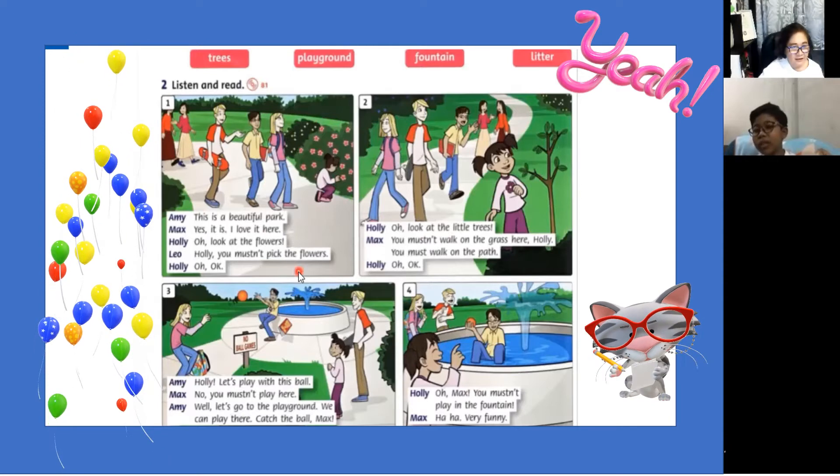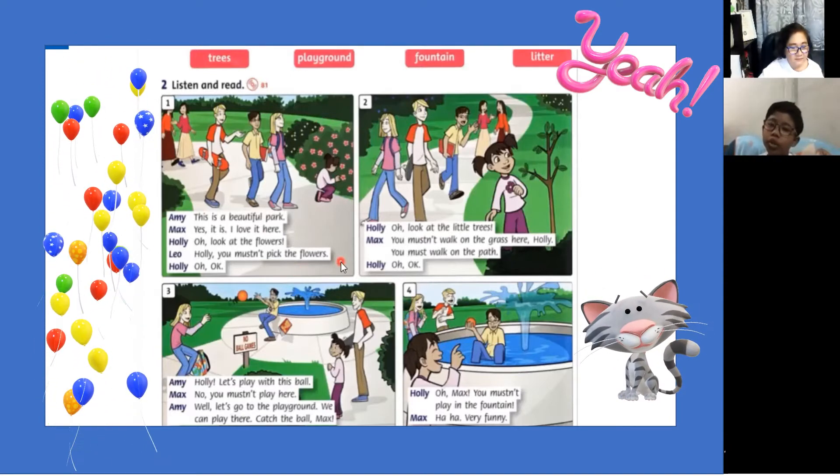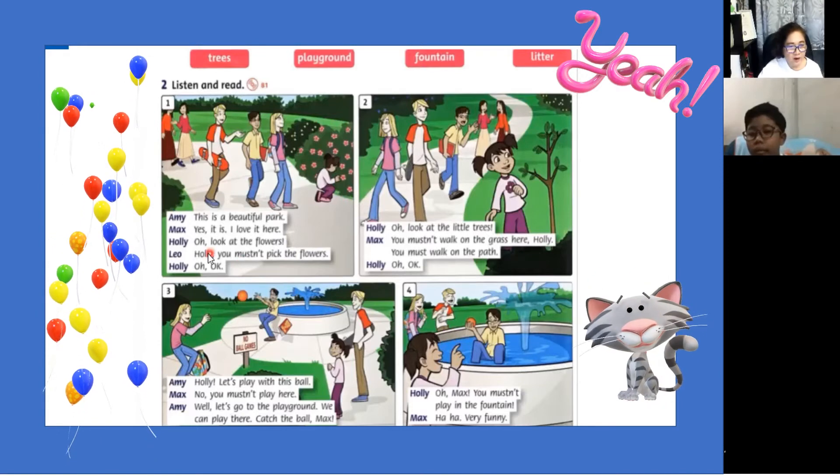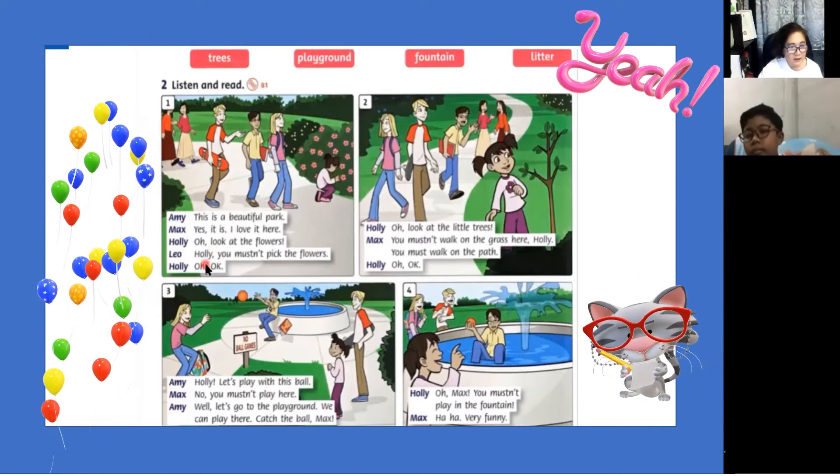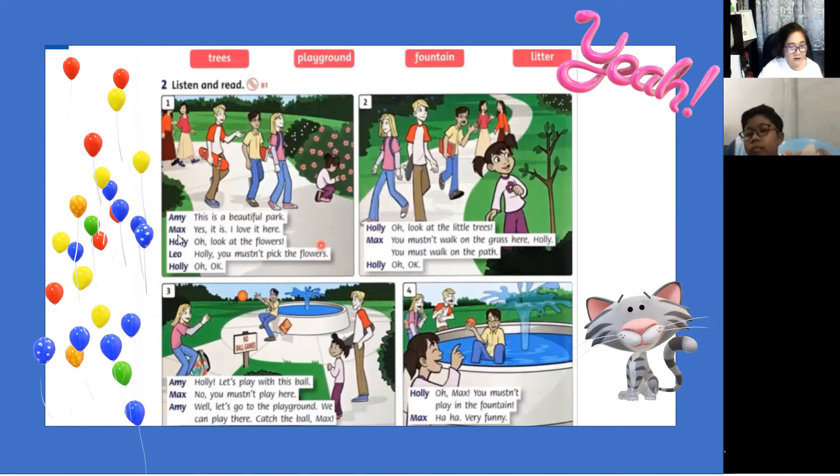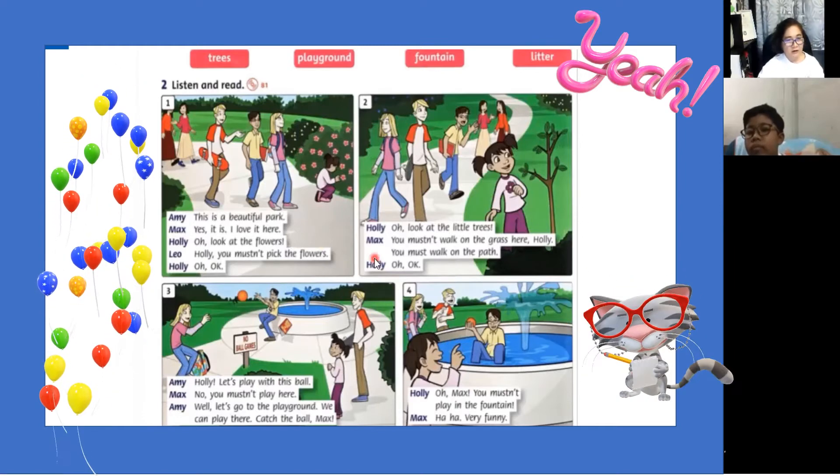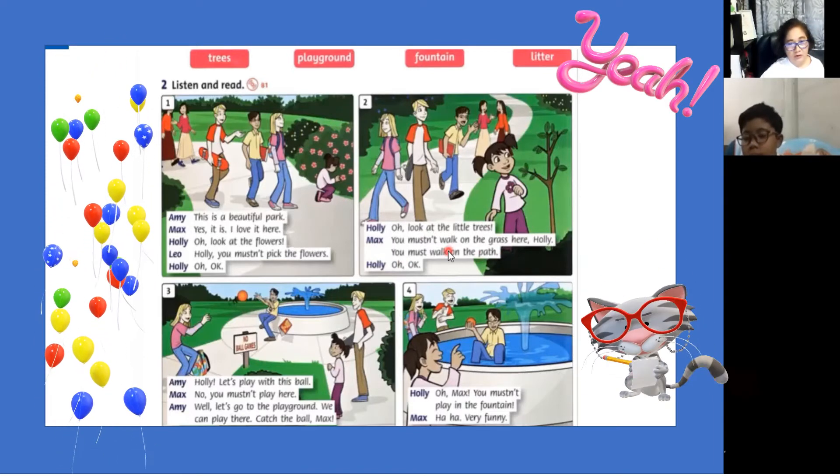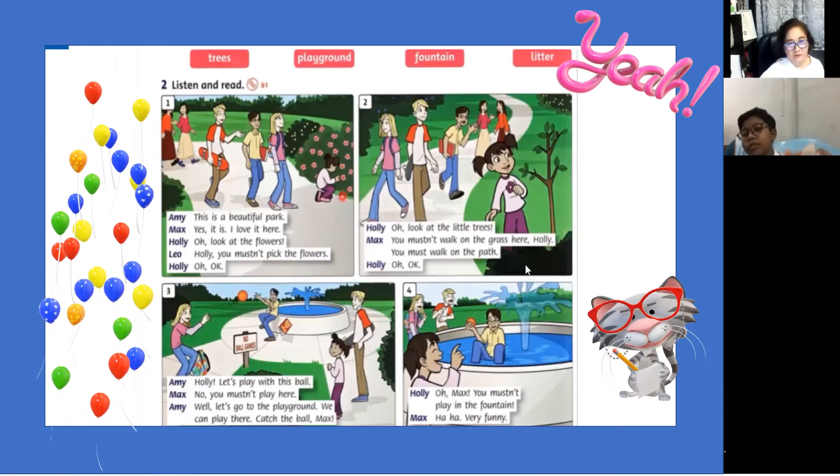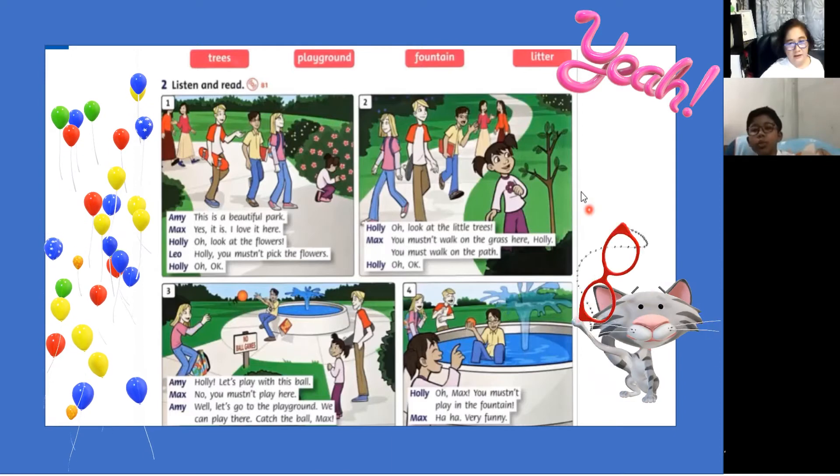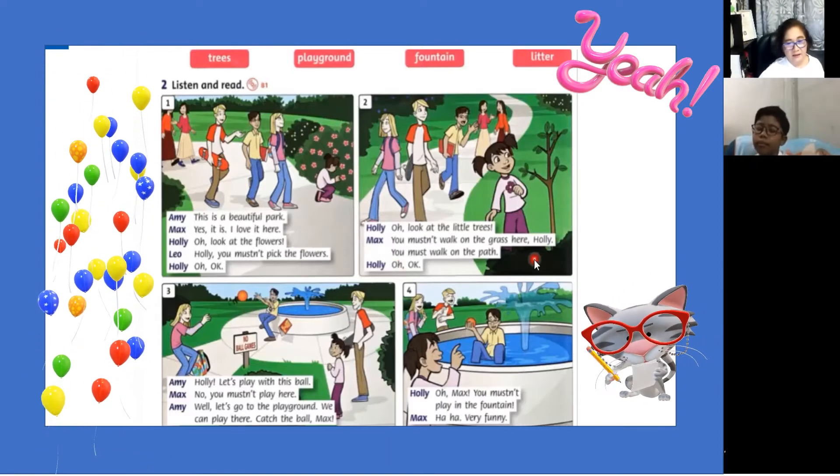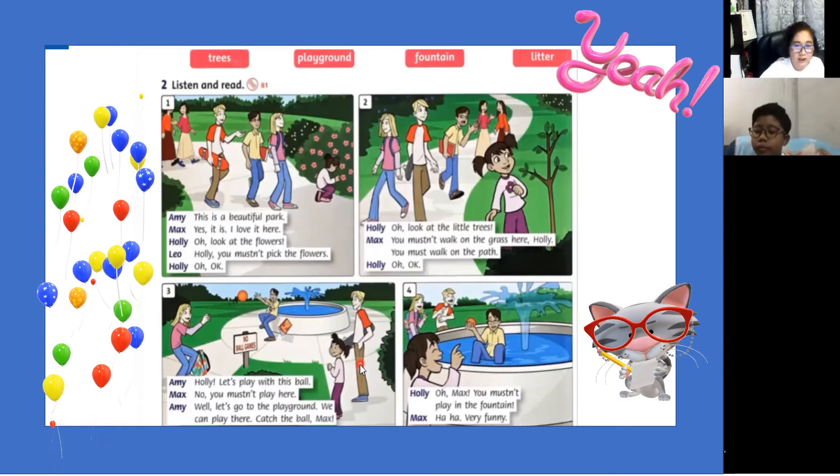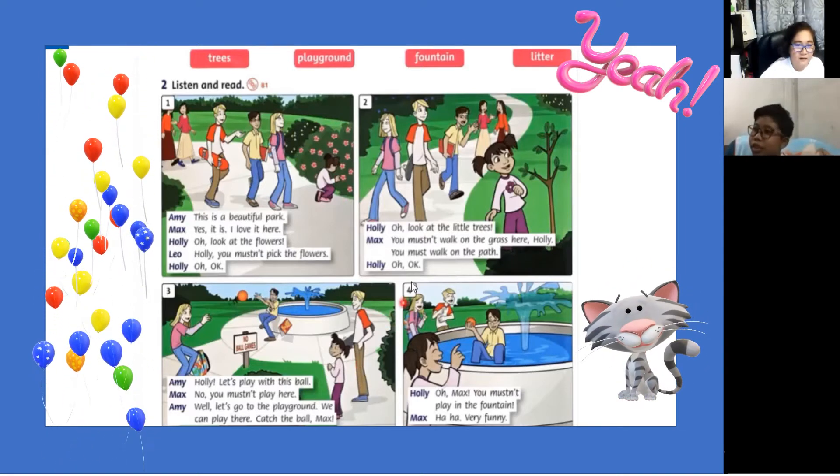You mustn't pick the flowers. Okay and then number two, what do they see here next? What do they see? They see little trees. Okay and then what did Max say? You mustn't walk on the grass, you must walk on the path. What is the path?